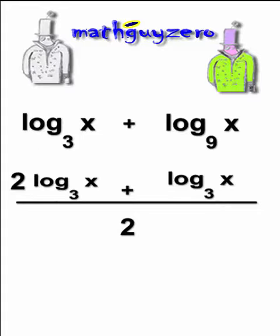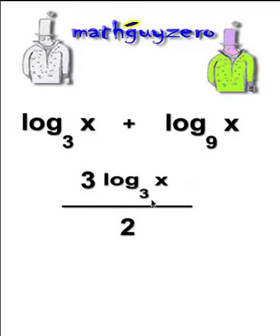And be careful here. A lot of people make this mistake, but this is simply 2 times some value plus the same value, right? So if this whole thing was like Y, it would be 2Y plus Y, which is like 3Y. But this is going to be 3 log base 3 of X.